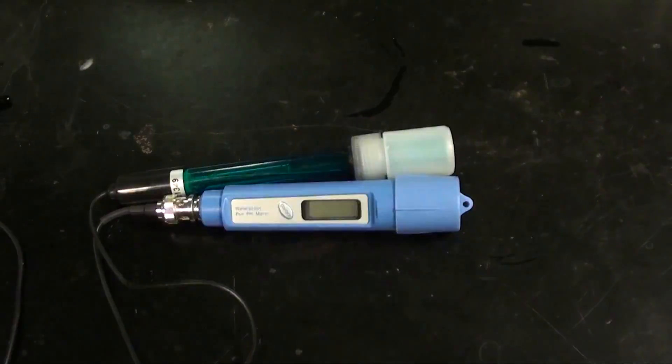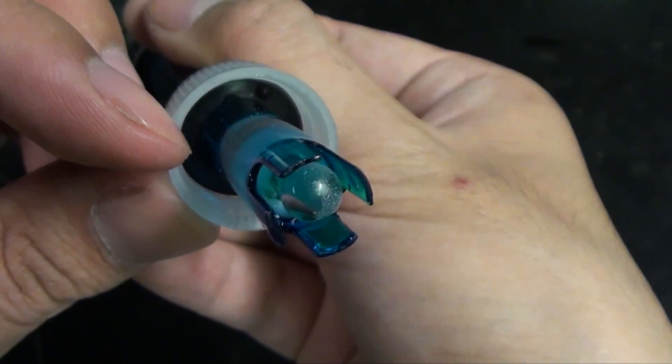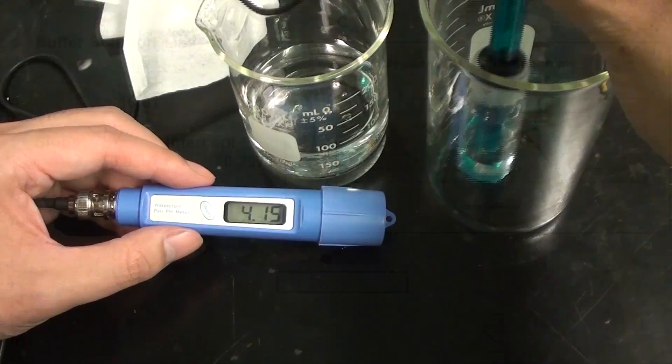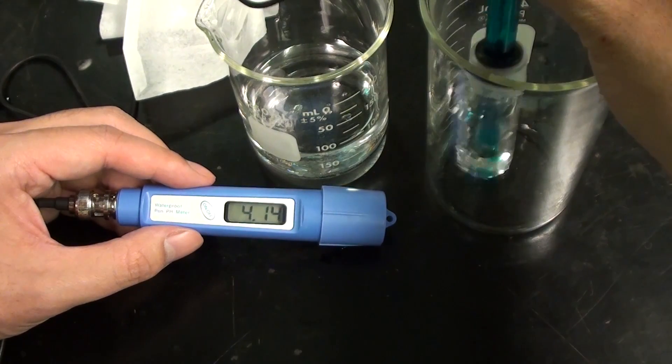Greetings fellow nerds. In a previous video I showed the pH meter and the basic approach of calibrating one. But cheaper meters had a problem that slope errors could not be corrected for.